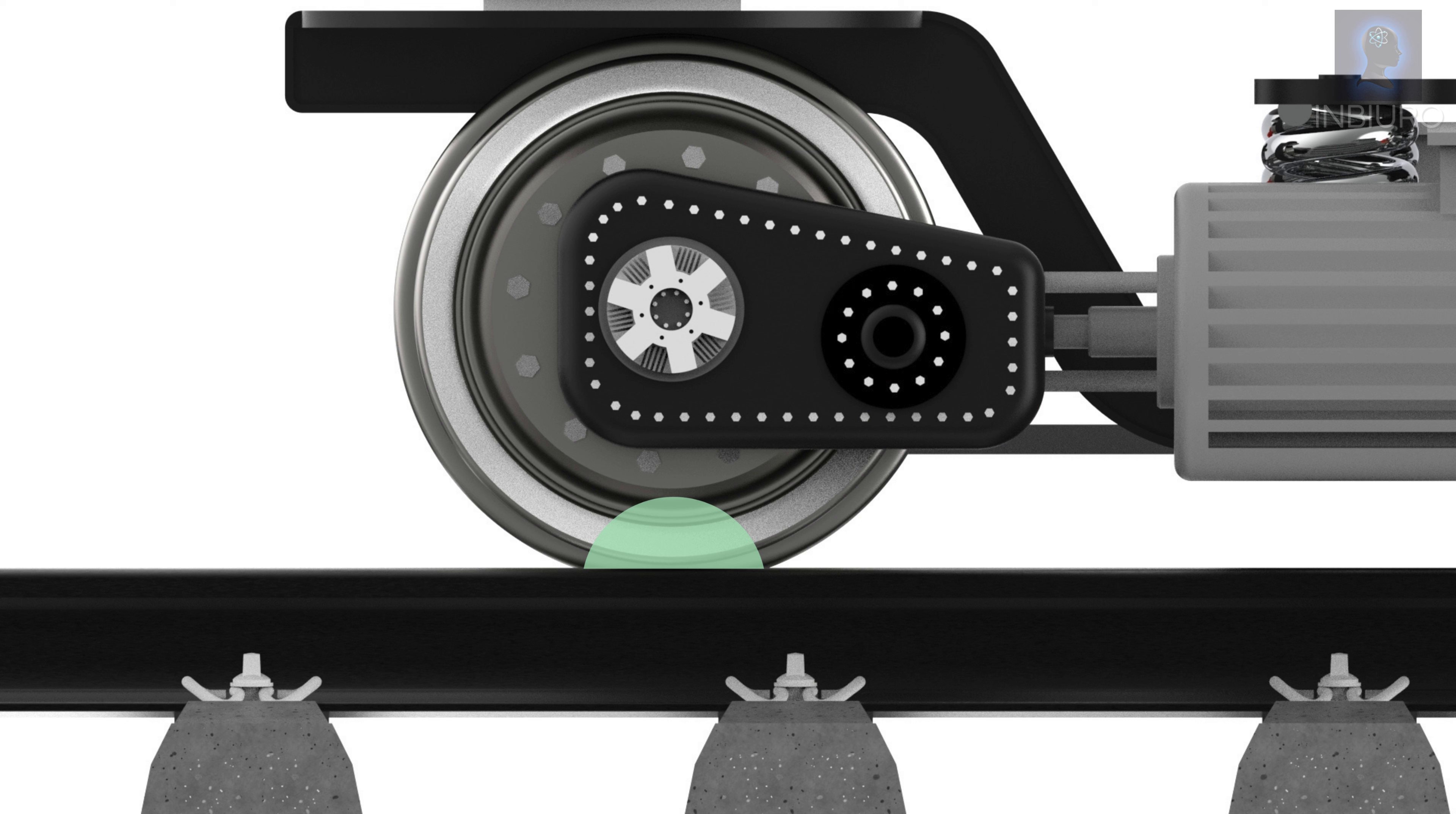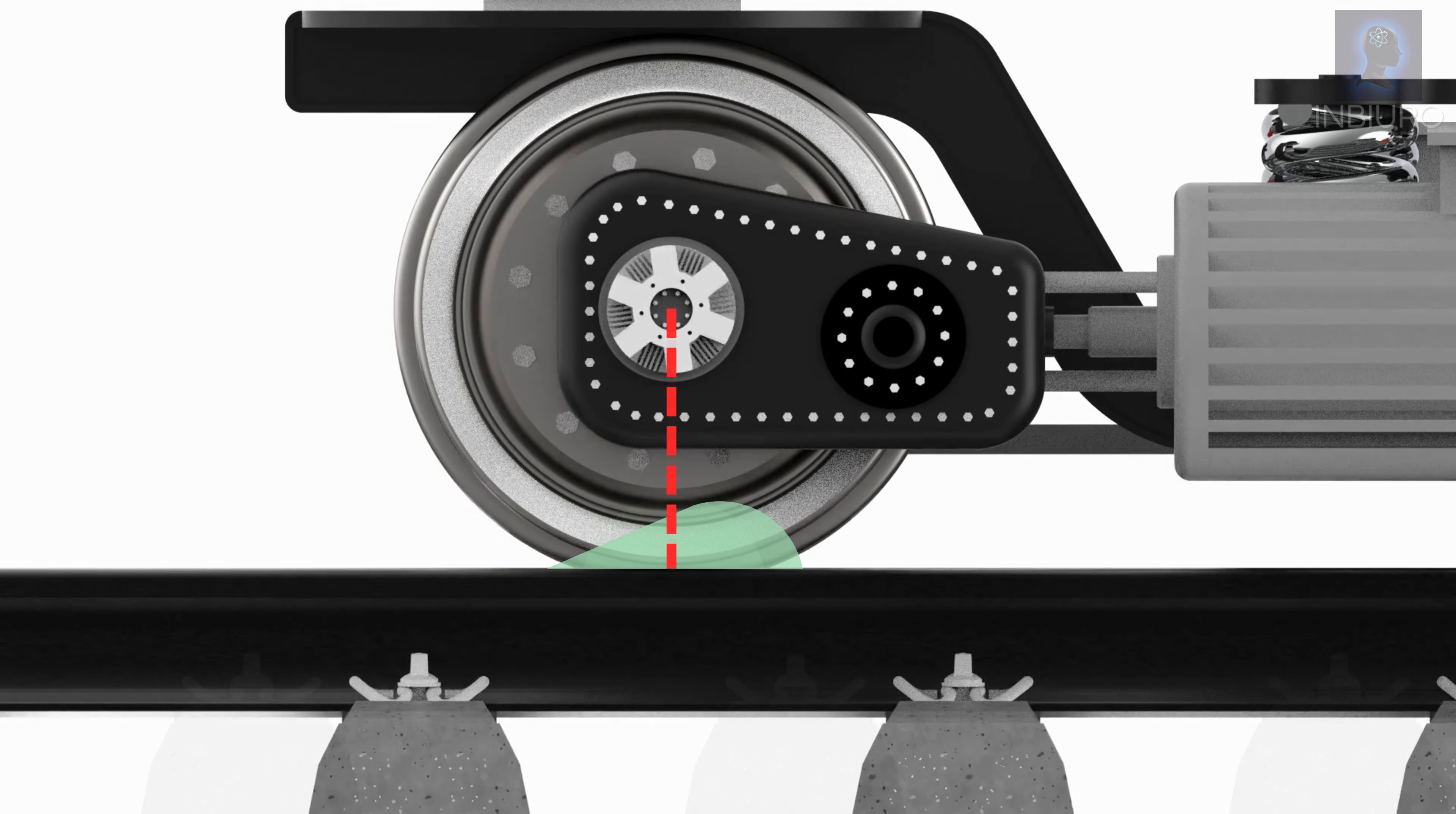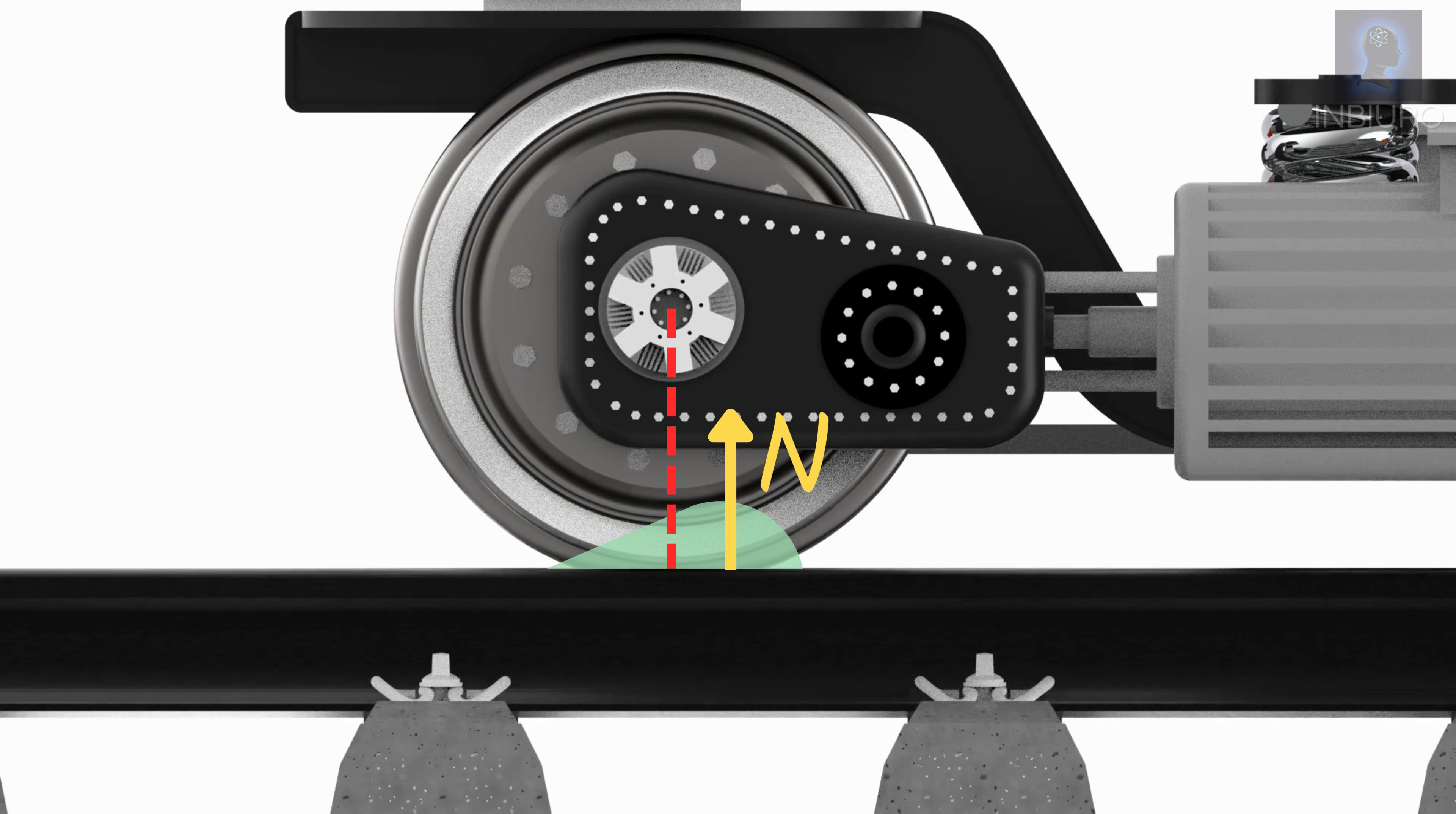When the wheel stays still on the rail, the contact forces distribute symmetrically around the axle causing no rotational moment. As soon as the wheel starts traveling the contact loads move towards traveling direction. Center of load is ahead of the axle.